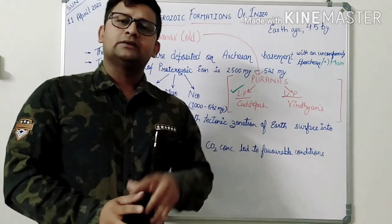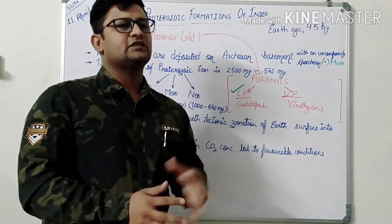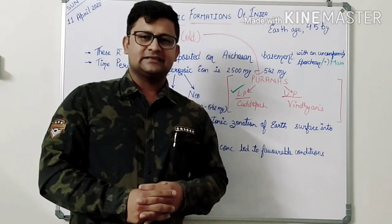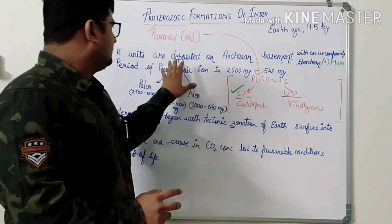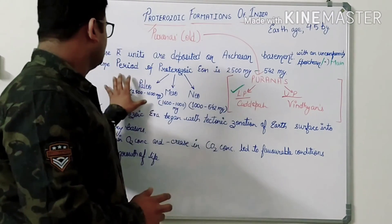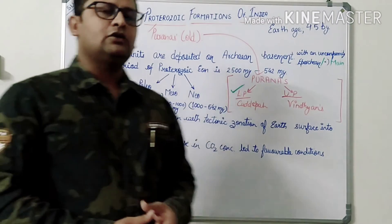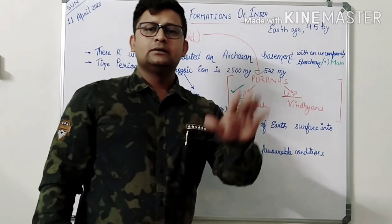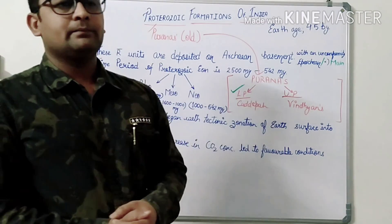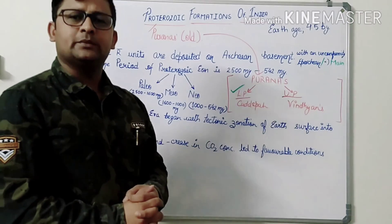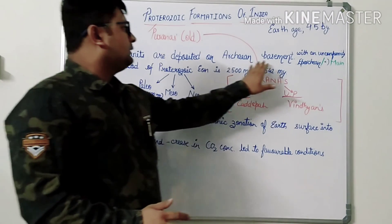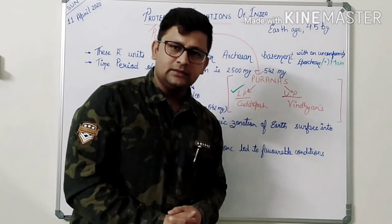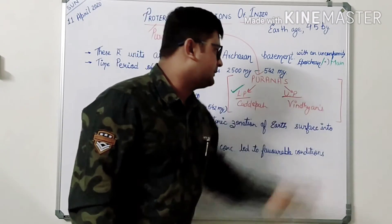These rock units are deposited on the Archean basement. The Archean basement was metamorphic and a little bit igneous, also made of gneisses and schists. There was upliftment and tectonic movement in the earth's history. The Archean rocks were overlaid by the Proterozoic formations of India. The Archean and the Proterozoic formations were differentiated by a prominent unconformity, which is known as the Eparchean or main unconformity.